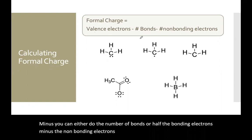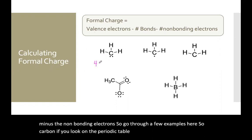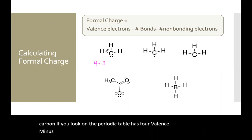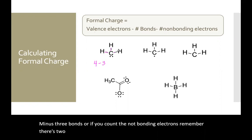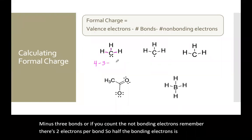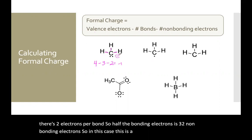We'll go through a few examples. Carbon, if you look on the periodic table, has four valence electrons. Minus three bonds — remember there are two electrons per bond, so half the bonding electrons is three — minus two non-bonding electrons. So in this case this is minus one. This is a carbanion.